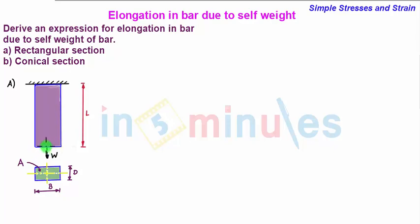Now we see that there is no external load acting on this rectangular section bar but its self weight W. So we have to find the elongation in this bar due to its self weight W.